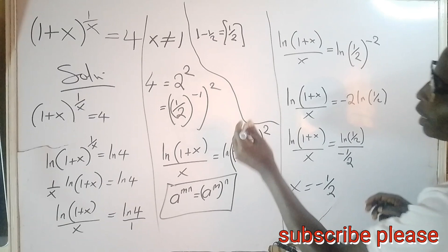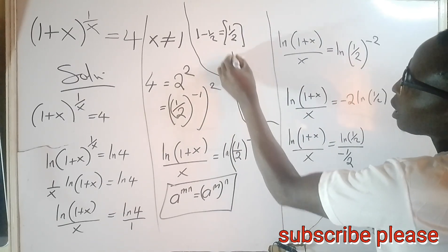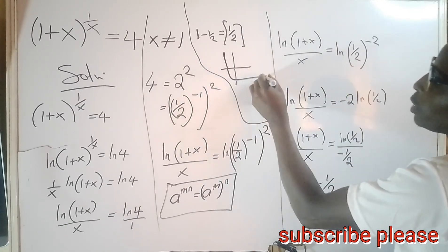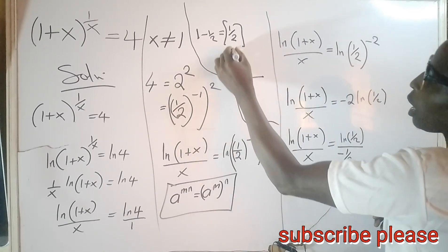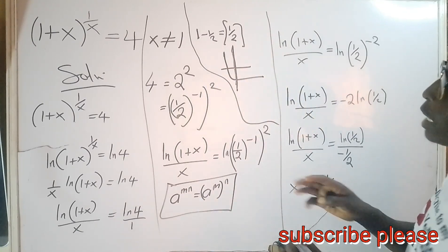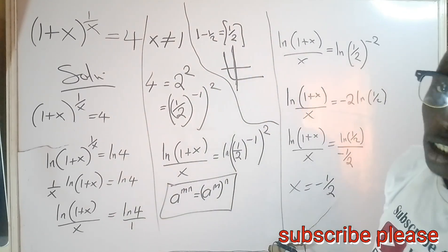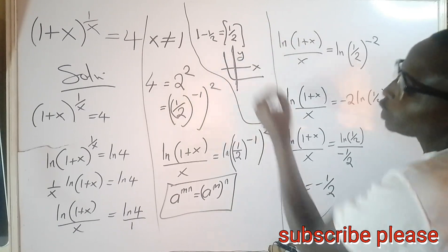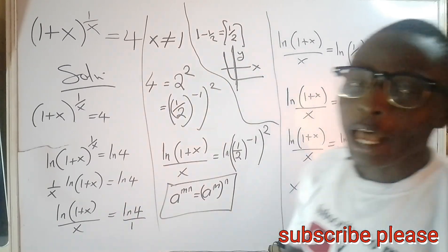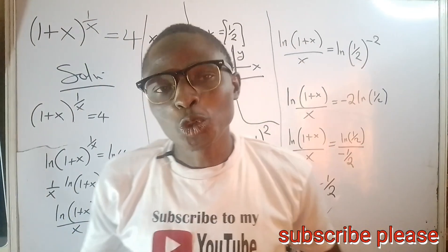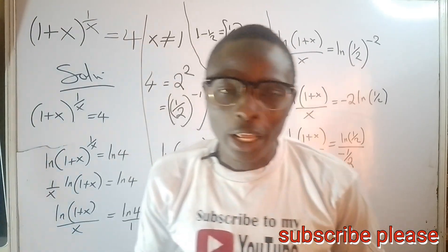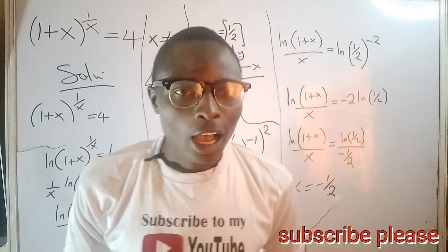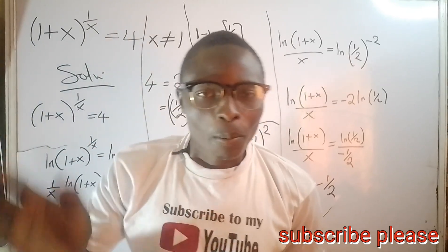Minus 1 over 2 is the only solution to this particular equation. This equation clearly shows that the graph may be reaching towards the negative side as x approaches infinity. Thank you so much for watching. Don't hesitate to subscribe for more exciting content like this and many more. Bye.